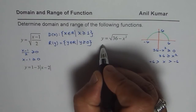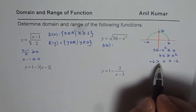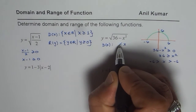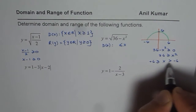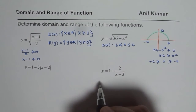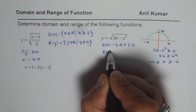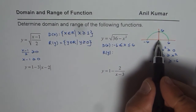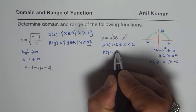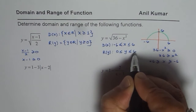We can write the domain in inequality form: x is greater than or equal to minus 6 and less than or equal to plus 6. As far as the range is concerned, the range for this function can be written as 0 to 6, so y is greater than or equal to 0 and less than or equal to 6.